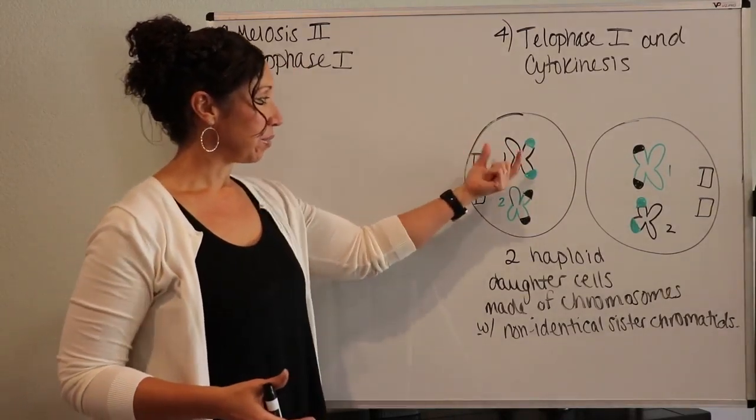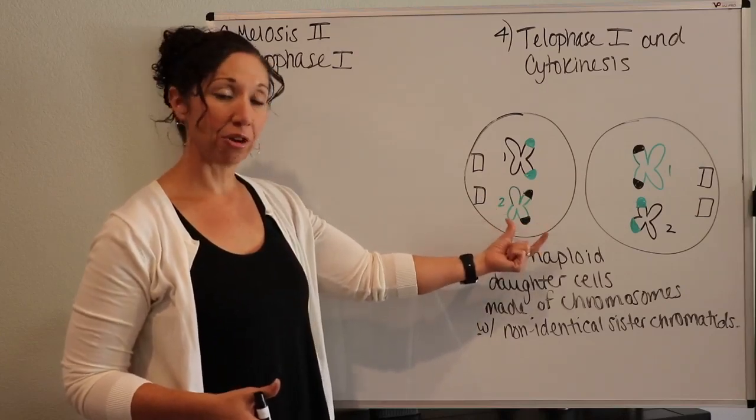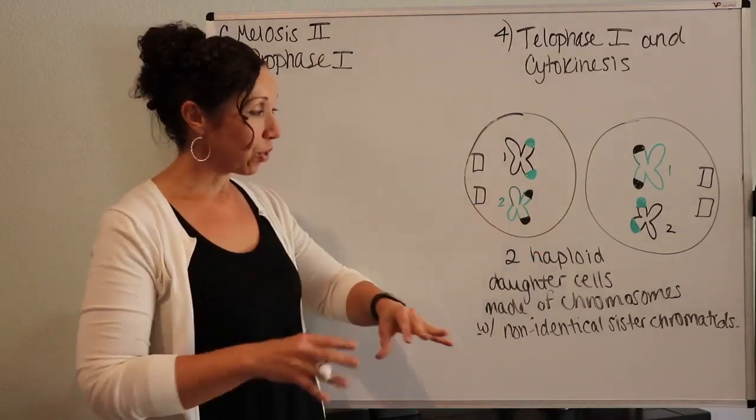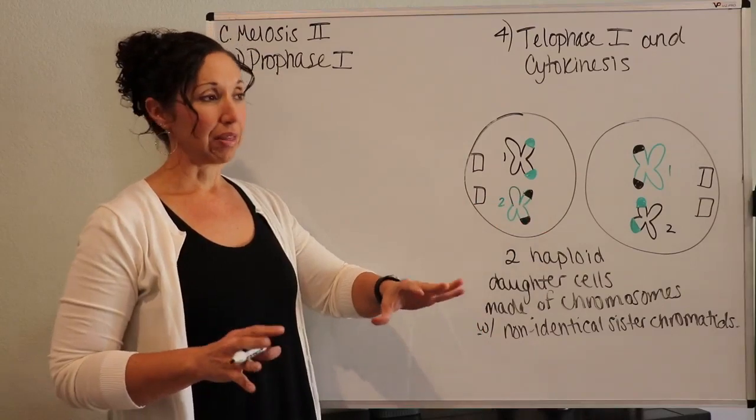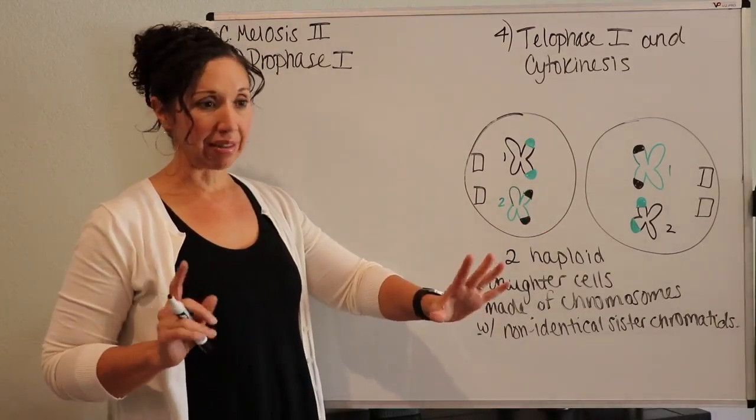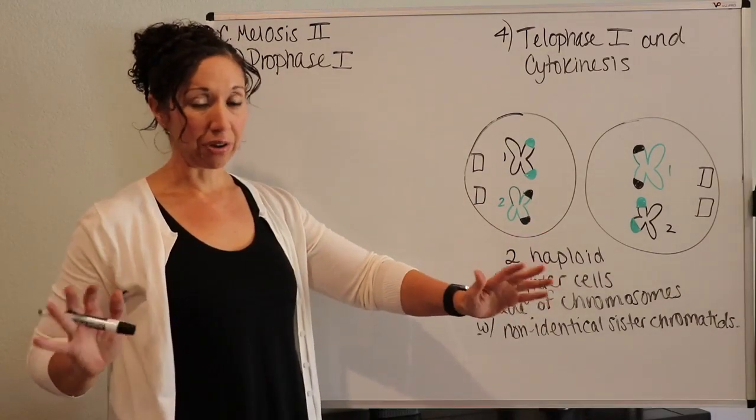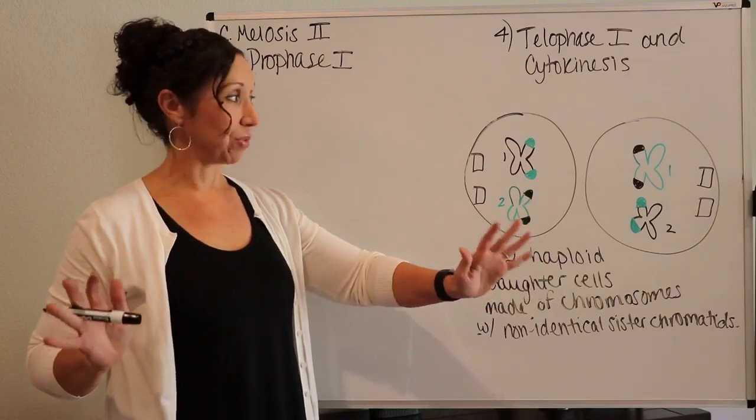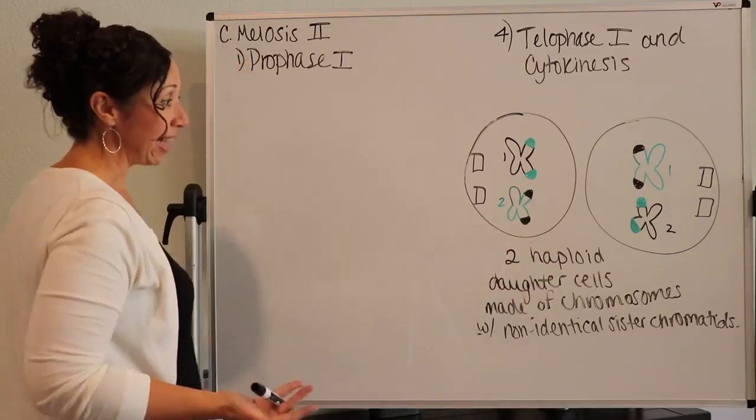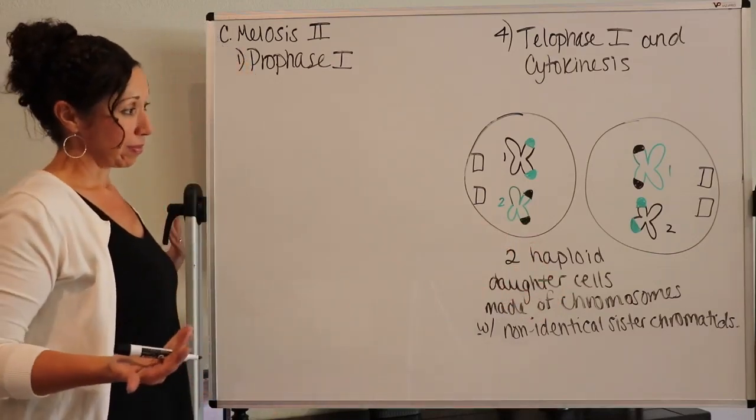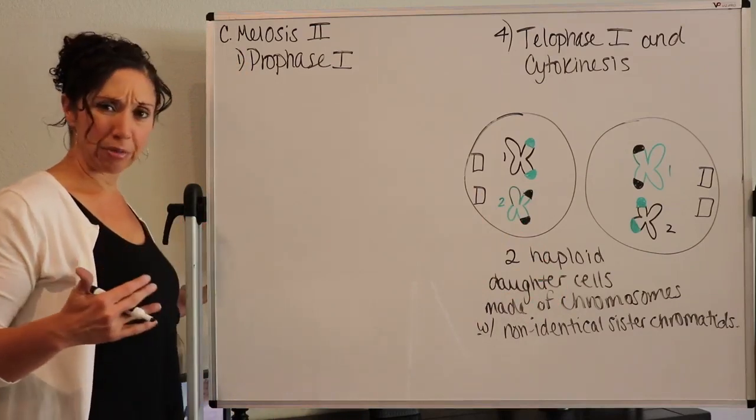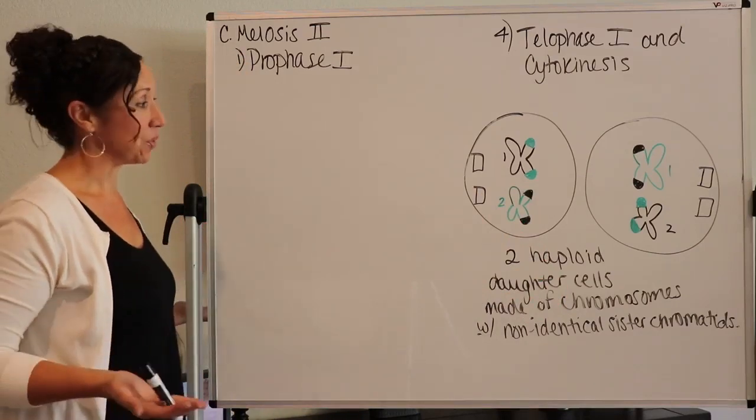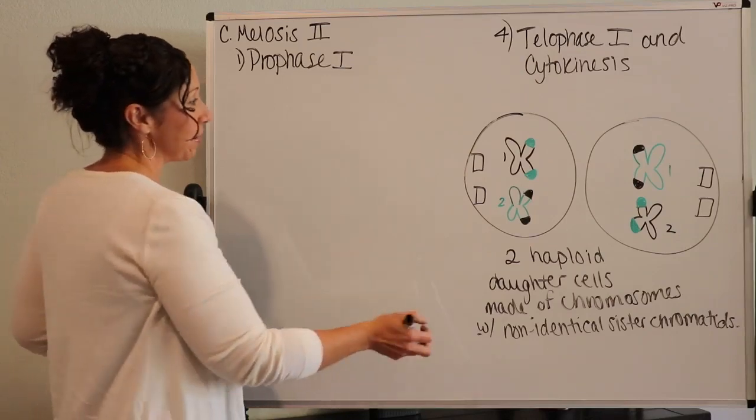That these two haploid cells with non-identical sister chromatids are going to become four haploid cells with single chromatids and nobody looks the same. All four cells are different. They're individual. They're different. And it makes sense when you're talking about how every egg looks different, every sperm looks different. That's actually very true.